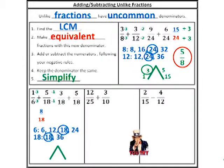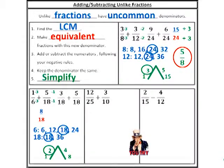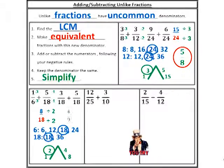Now I add my numerators together, and my denominator stays the same. Three plus five is eight. Eighteen stays the same. I'm going to simplify. Factors of eight. Eighteen divided by eight — decimal. Eighteen divided by four — decimal. Eighteen divided by two gives me a whole number. So there's my GCF, my greatest common factor. Divide top and bottom. Always circle your answer. Should get four ninths.